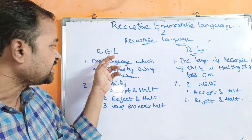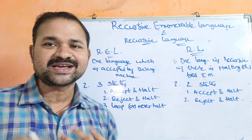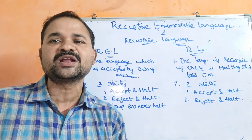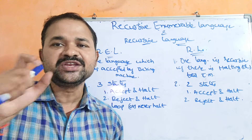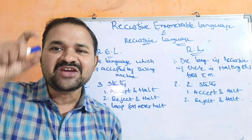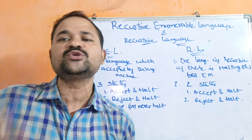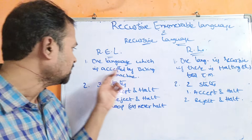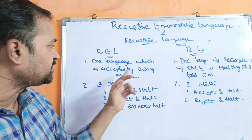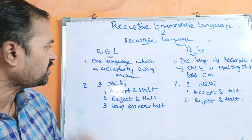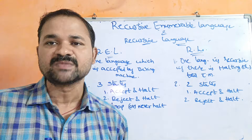So likewise, REL stands for recursive enumerable language. Recursive enumerable language means the language which is accepted by Turing machine. So the language which is accepted by Turing machine is called as recursive enumerable language.